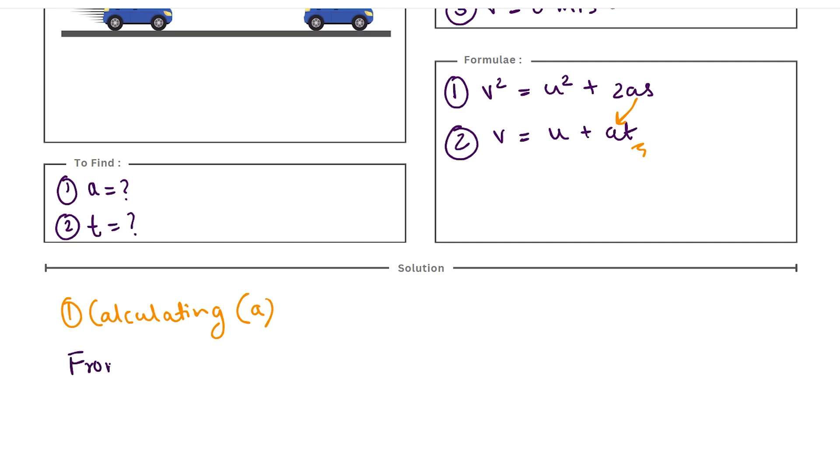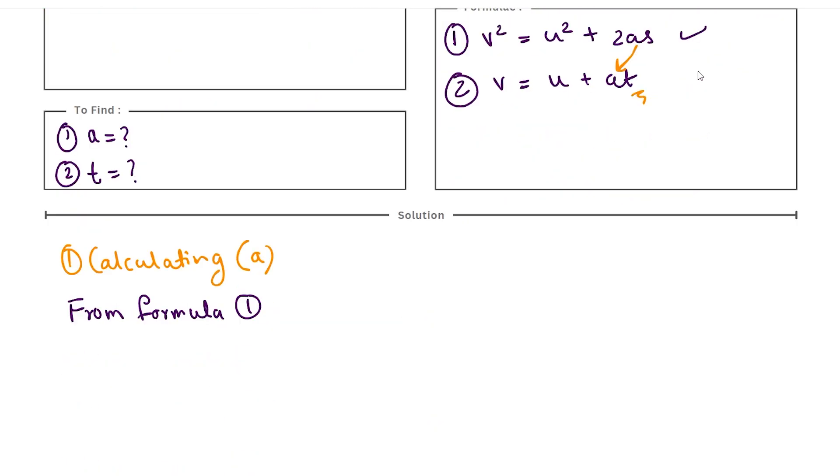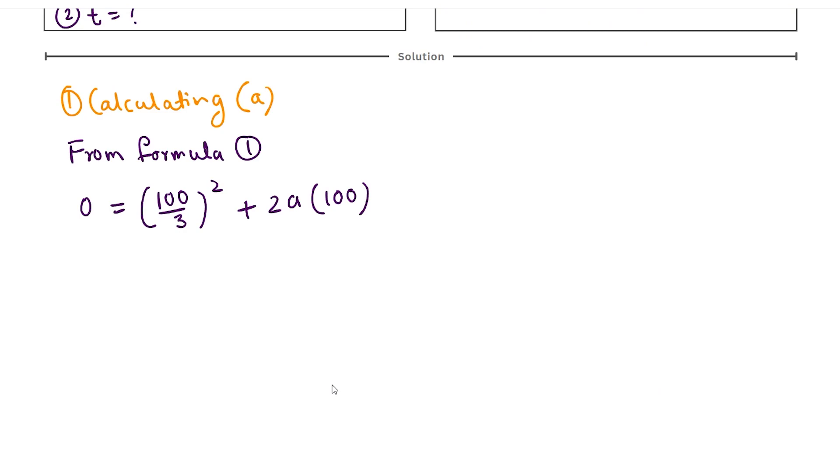From formula 1, if we substitute all these values, we get an equation something like this. The final velocity is 0, initial velocity is 100 by 3 meter per second squared plus 2a is unknown and distance is 100. If we solve this further, we get 200 times a equals 10 raised to 4 upon 9, basically square of this quantity.